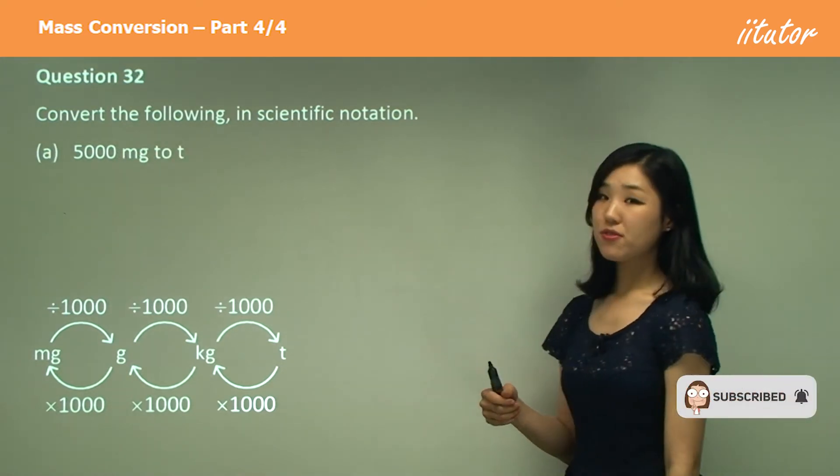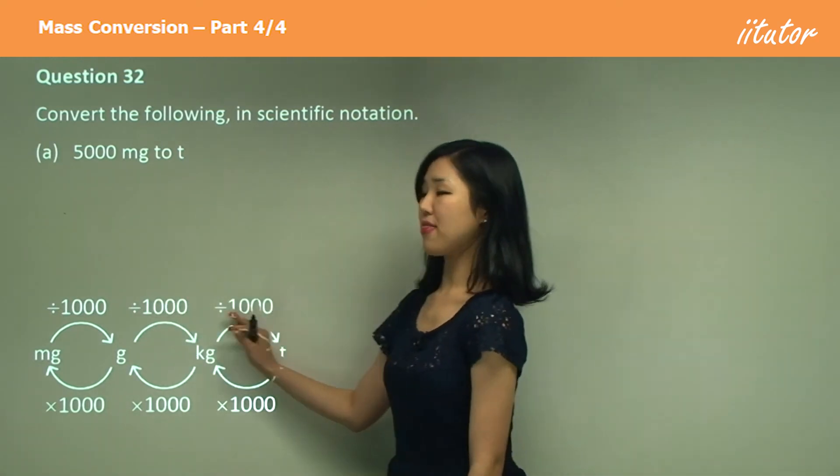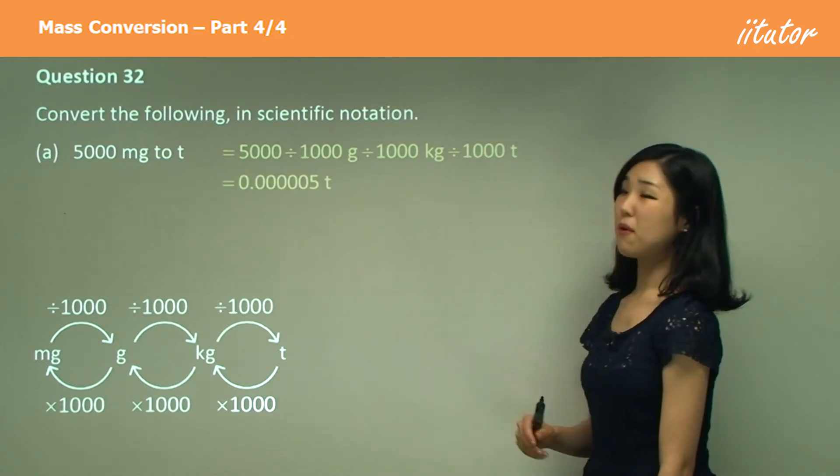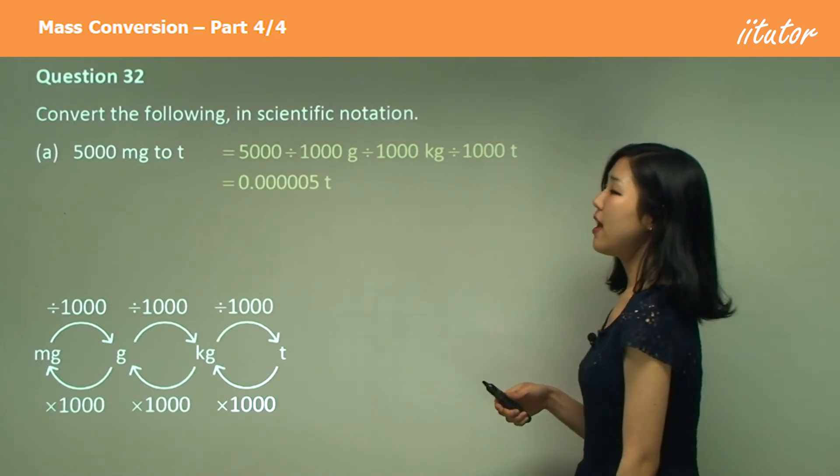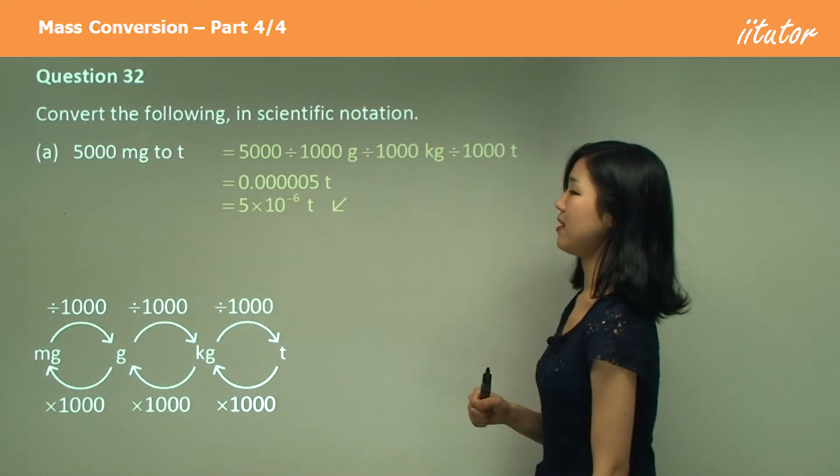This time the opposite direction, smaller unit to the largest unit. So we're going to be dividing by thousand three times, like that. So your decimal number will be a very small decimal. So we're going to put the decimal there and that means we have to go back six times, so it's negative six.